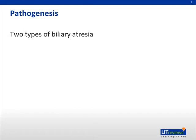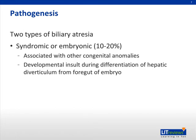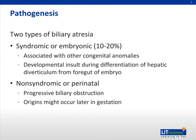Two types of biliary atresia have been described. The first is syndromic or embryonic, which represents 10 to 20% of cases. This type is associated with other congenital anomalies and is thought to be due to a developmental insult during differentiation of the hepatic diverticulum from the foregut of the embryo. The other type is called nonsyndromic or perinatal, characterized by progressive biliary obstruction, with origins thought to occur later in gestation.